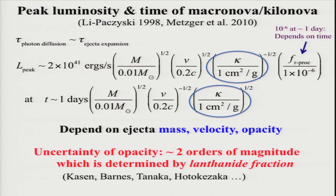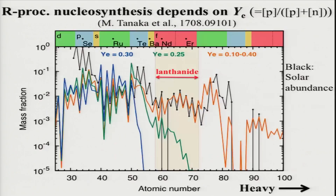Before going ahead, I'd like to talk about this uncertainty in more detail. Kappa is determined by the fraction of lanthanoids, and the lanthanoid fraction is determined by the electron fraction. The electron fraction Y_e is defined as the proton fraction divided by the nucleon fraction. In other words, Y_e is an anti-neutron richness measure — if Y_e is small, the proton fraction is small, so the material is neutron-rich. This is a result for the nucleosynthesis calculation, where the horizontal axis is the atomic number and the vertical axis is the mass fraction.